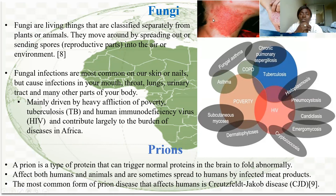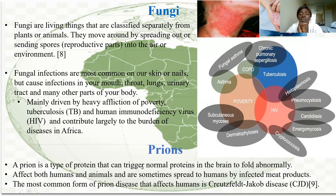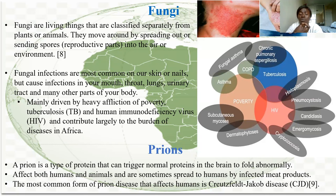The last pathogen type is prions — a type of misfolded protein that can trigger abnormal protein folding in the brain. This is not as common as other pathogens. Most times prion disease occurs through eating infected meat products; animals are infected and when humans eat those animals, they become infected.